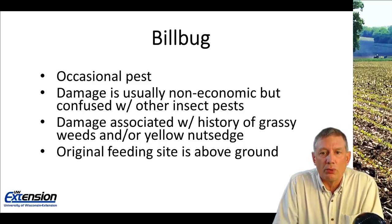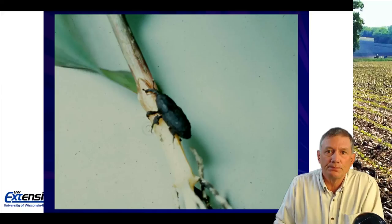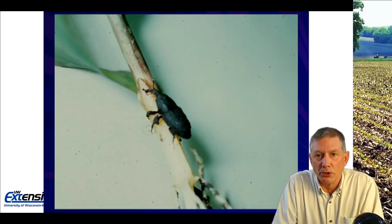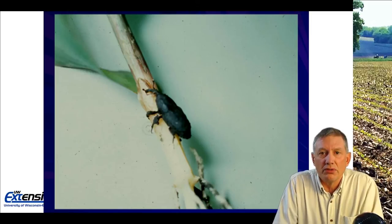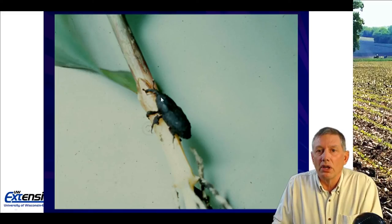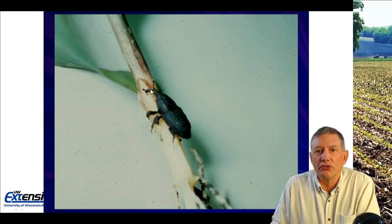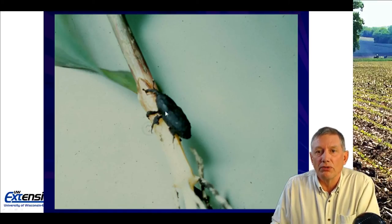The one point I do want to bring up with billbugs is that the original feeding site will always be above ground. Here's a picture of what an adult billbug looks like — maybe three-eighths of an inch long, very dark color, and like all weevils, has a long snout. In this particular picture, that adult is starting to feed on the outside of that seedling corn plant, and that feeding site will always be above ground.